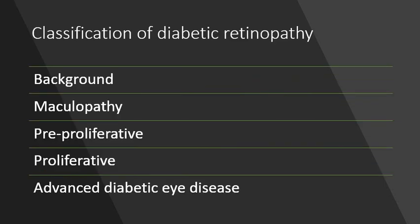I'm not going to talk more about diabetic retinopathy as a disorder because that's been covered elsewhere. I'm going to launch straight into the different classification types of diabetic retinopathy. And these include background, maculopathy, pre-proliferative, proliferative, and then finally advanced diabetic eye disease.